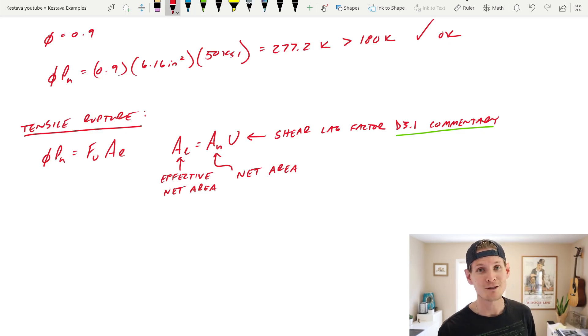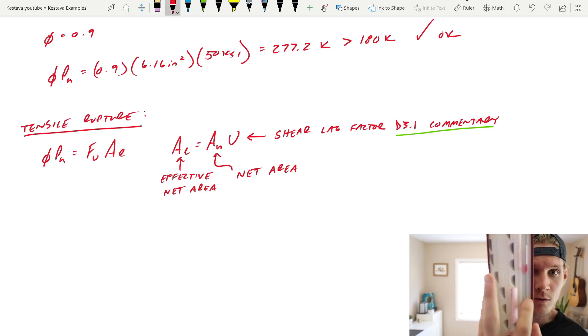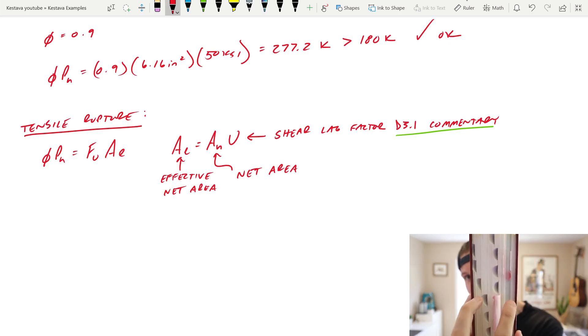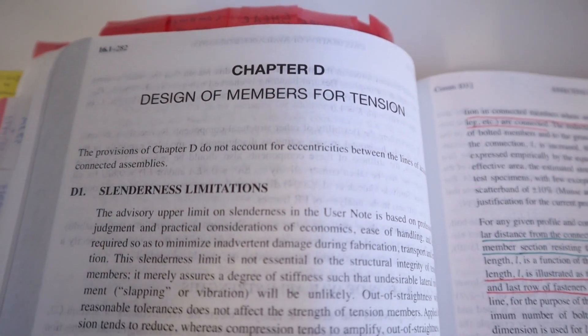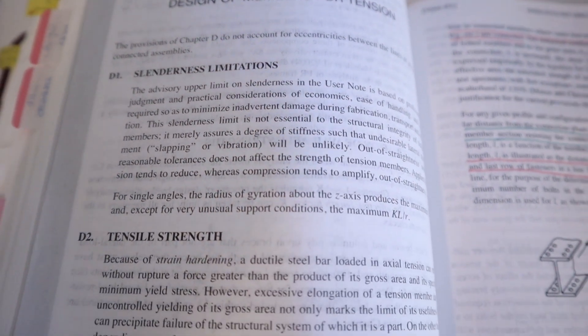So let's very quickly jump over to D3.1 in the commentary, because I do want to define what that shear lag factor is, so that we're all following along. Now, for all of you, and again, sorry I'm using the book today, not the digital version. See the gray section right here? See everything else is white, and then this is gray? That is your commentary section, all right? So if we flip over to that, and the commentary section is laid out just like the chapters. So we were in chapter D before, now we need to go to the commentary section D, because that aligns with chapter D. Make sense? So chapter D is page 16.1-282, all right? That looks a little something like that.